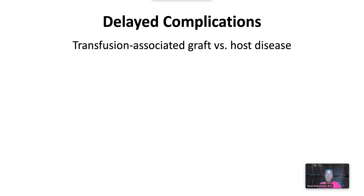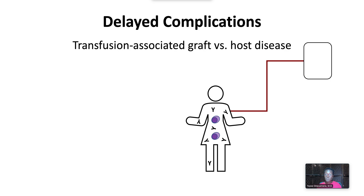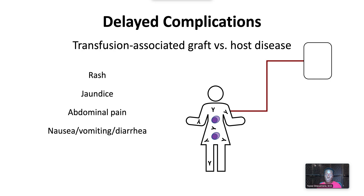Transfusion-associated graft-versus-host disease occurs when passenger donor lymphocytes are transferred to an immunocompromised recipient who is unable to destroy them. The donor lymphocytes generate an immune response, which is evident within days to a few weeks of the transfusion. Symptoms include a diffuse maculopapular rash, jaundice, abdominal pain, nausea, vomiting, and/or diarrhea, abnormal liver chemistries, and pancytopenia. Transfusion-associated graft-versus-host disease can be prevented by irradiation, which destroys passenger donor lymphocytes.